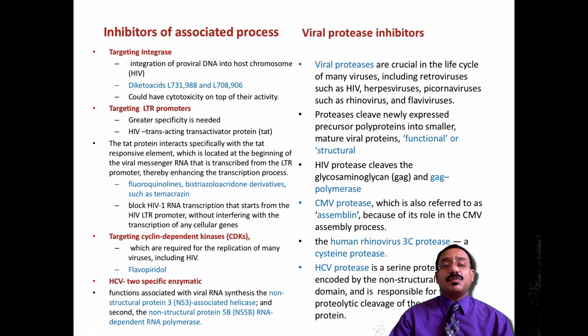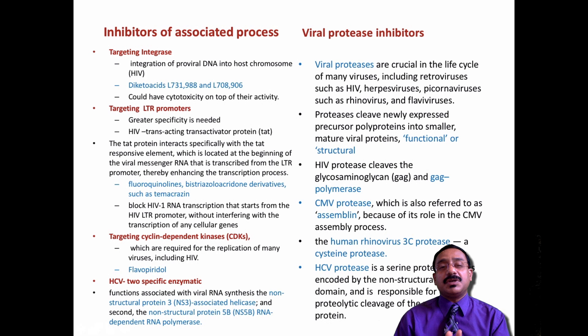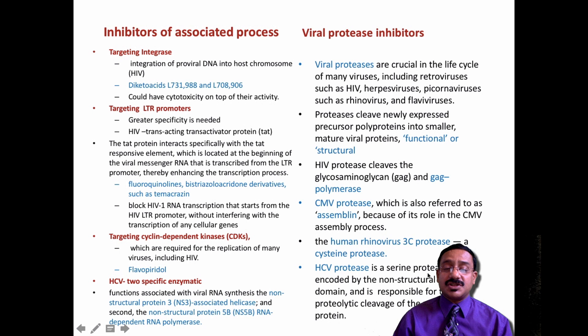Viral protease inhibitors: viral proteins — both functional and structural — can be inhibited. One example is the GAG polyprotein, which covers the HIV molecule and helps in interaction. In cytomegalovirus (CMV), proteases referred to as assemblins help in assembly — inhibiting this stops assembly. Cysteine proteases of rhinovirus (common cold) can also be targeted. HIV protease is a serine protease encoded by the non-structural protein domain, helping in proteolytic cleavage of non-structural proteins. These viral proteases can be inhibited to prevent further viral action.